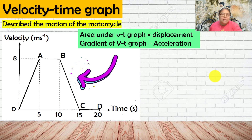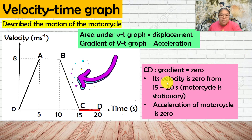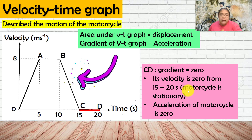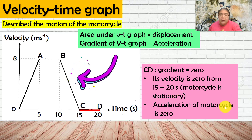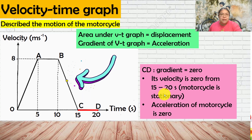For C to D on the VT graph: there is no velocity, so gradient equals zero, meaning velocity also equals zero. The motorcycle is stationary and not moving, so acceleration is zero.